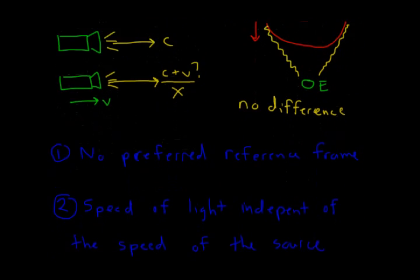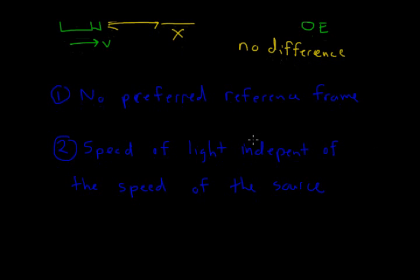So special relativity, even though it makes all of these weird predictions that there's time dilation and length contraction and all of these other weird effects that come out of it, it's based on only two postulates, that there's no preferred reference frame and that the speed of light is independent of the speed of the source. And from those two fairly reasonable assumptions, all of these weird effects fall out of it.